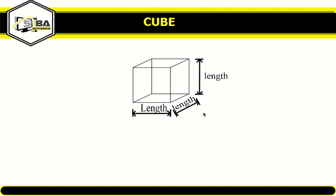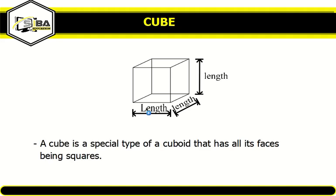Now let's look at the cube. Unlike the cuboid, the cube has all its faces being squares, and moreover all the sides of a cube are equal.